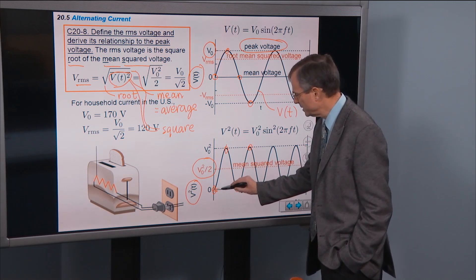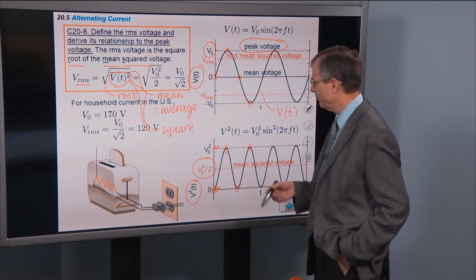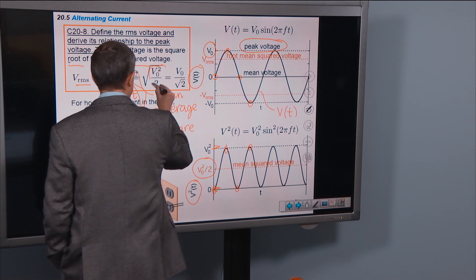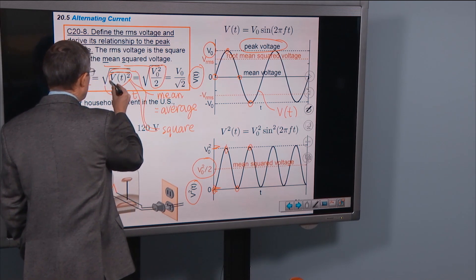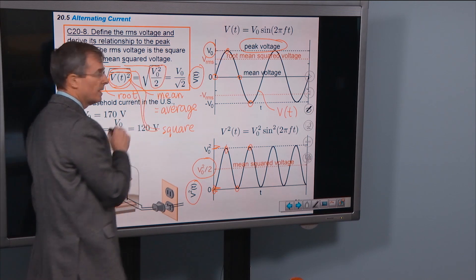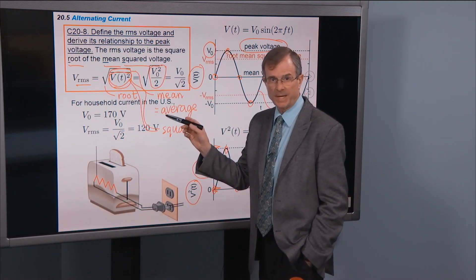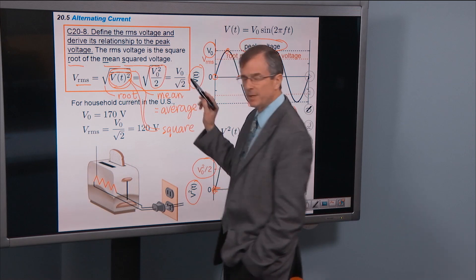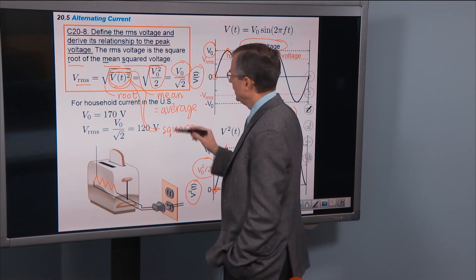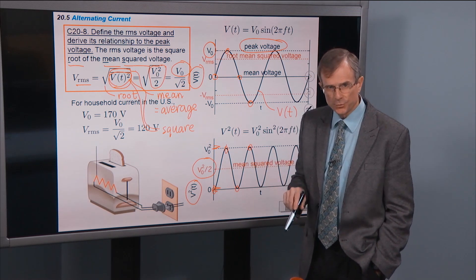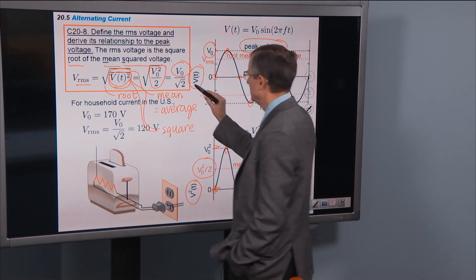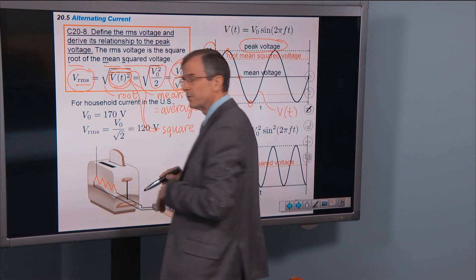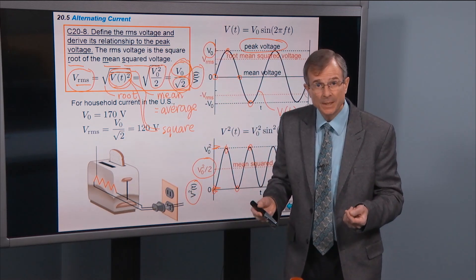The mean of V²(t) should be right about halfway between the top and bottom, and indeed it is. The mean squared voltage is V-naught² over 2 — halfway between zero and V-naught². We've now taken the mean of the squared voltage. All that remains is to take the square root of that.